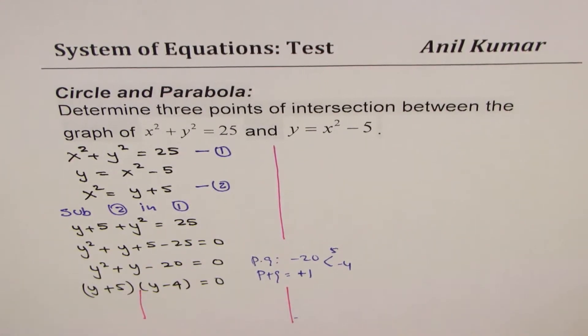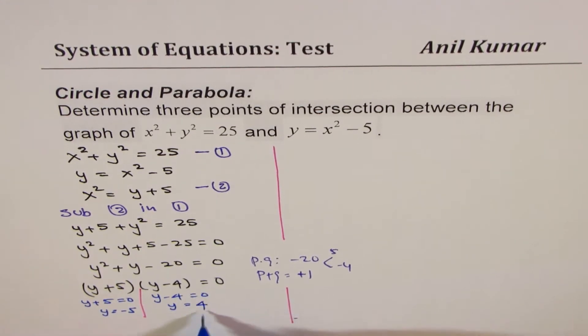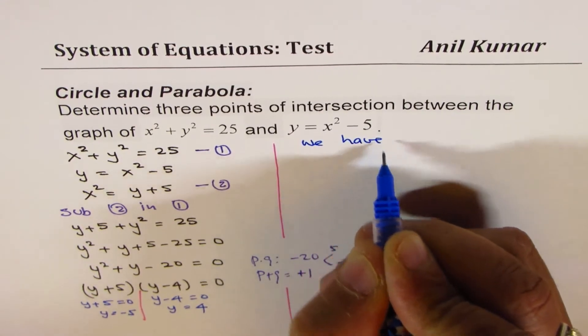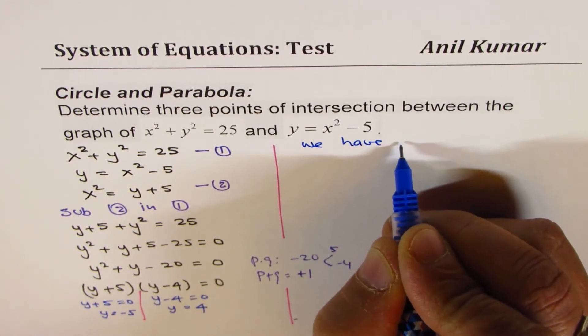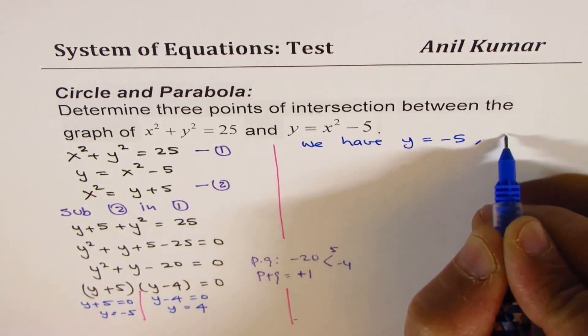So these are the two factors. If I write y plus 5 equals 0, I get y equals minus 5. If I get y minus 4 equals 0, we get y equals 4. So we have two values: y equals minus 5 and 4.